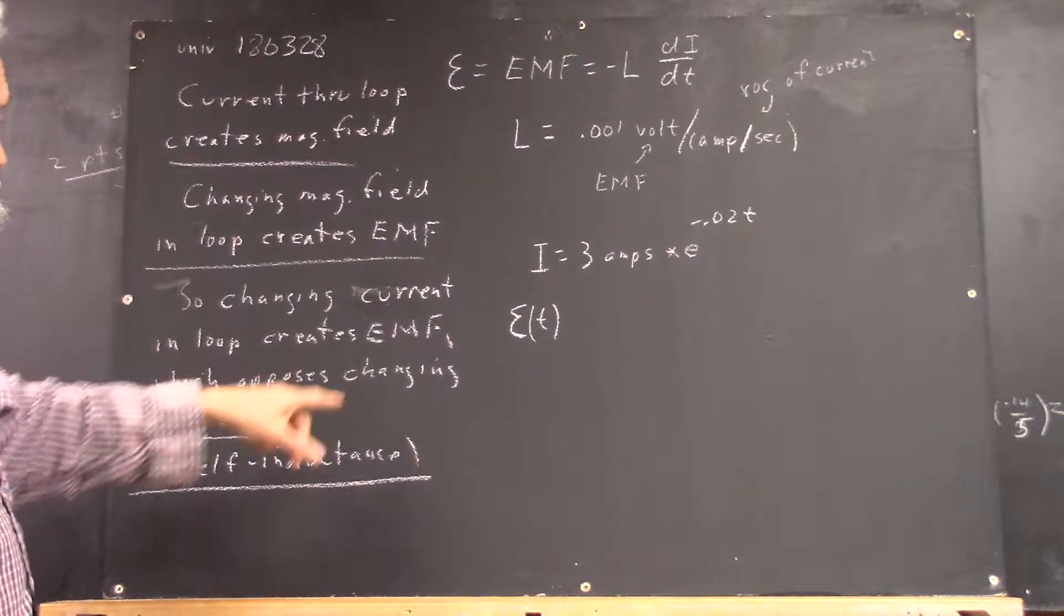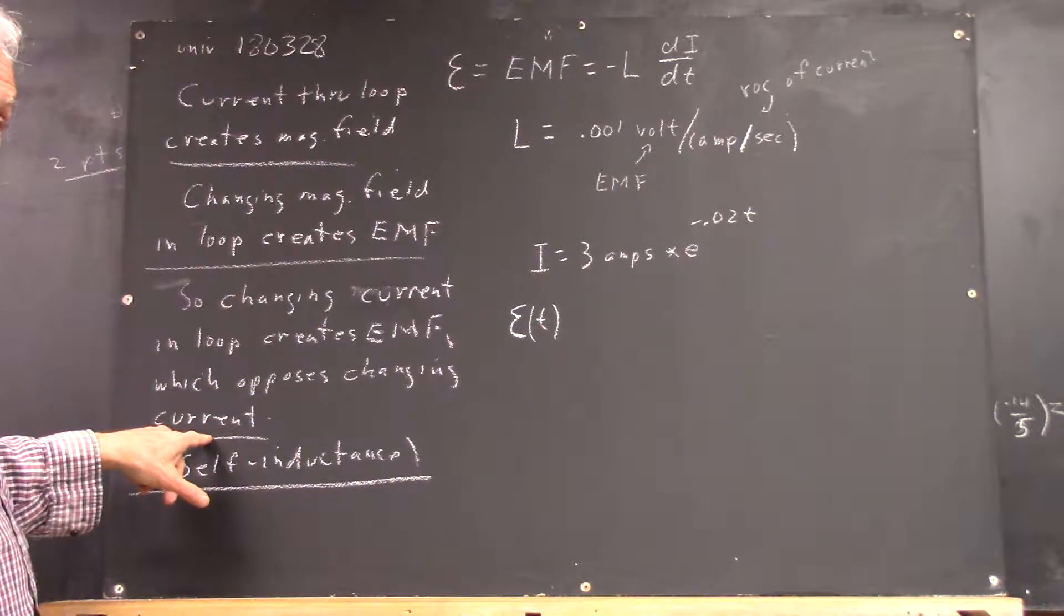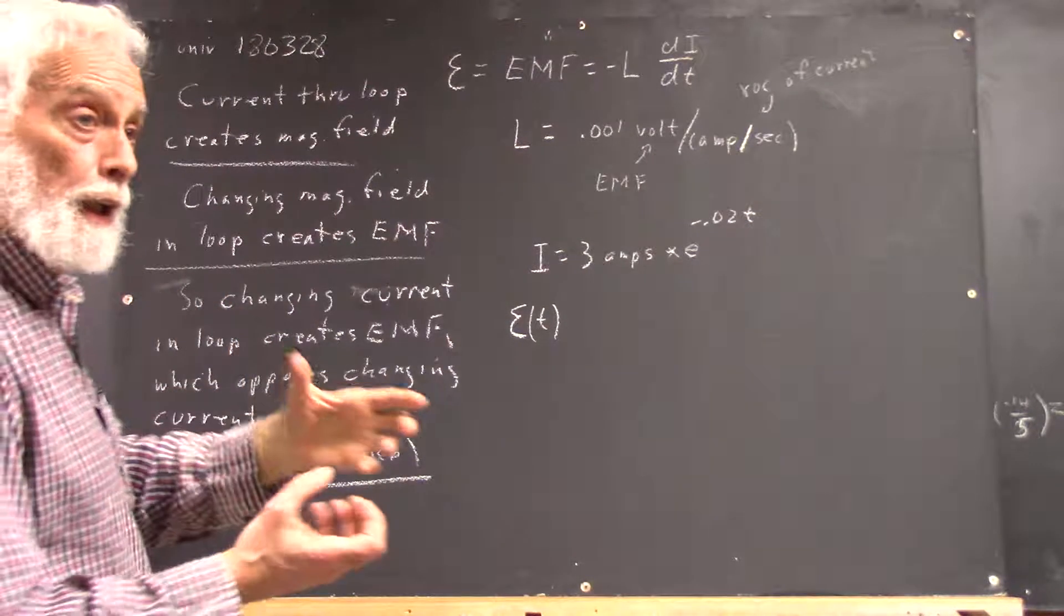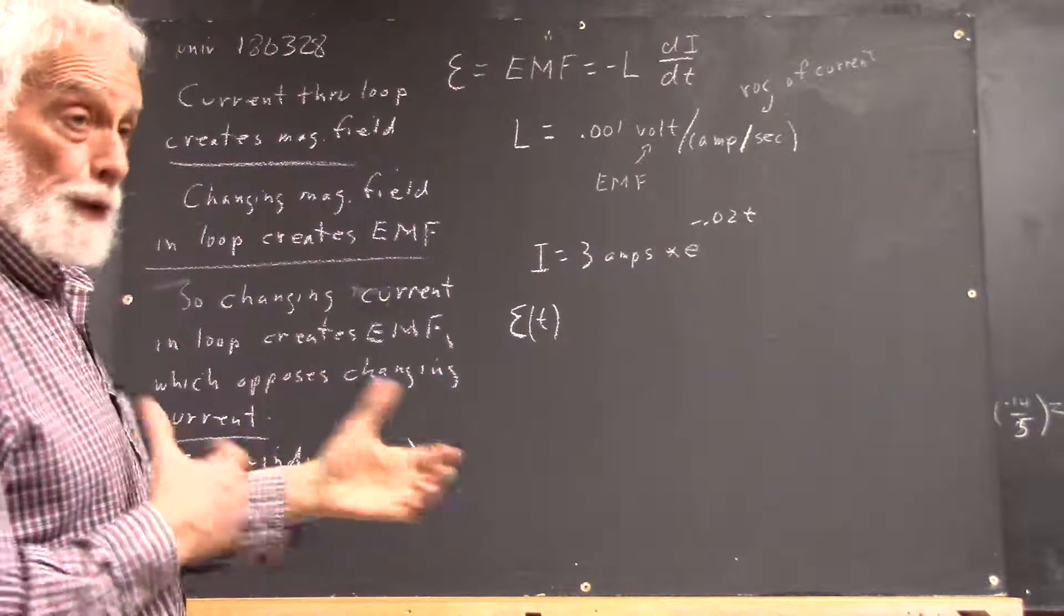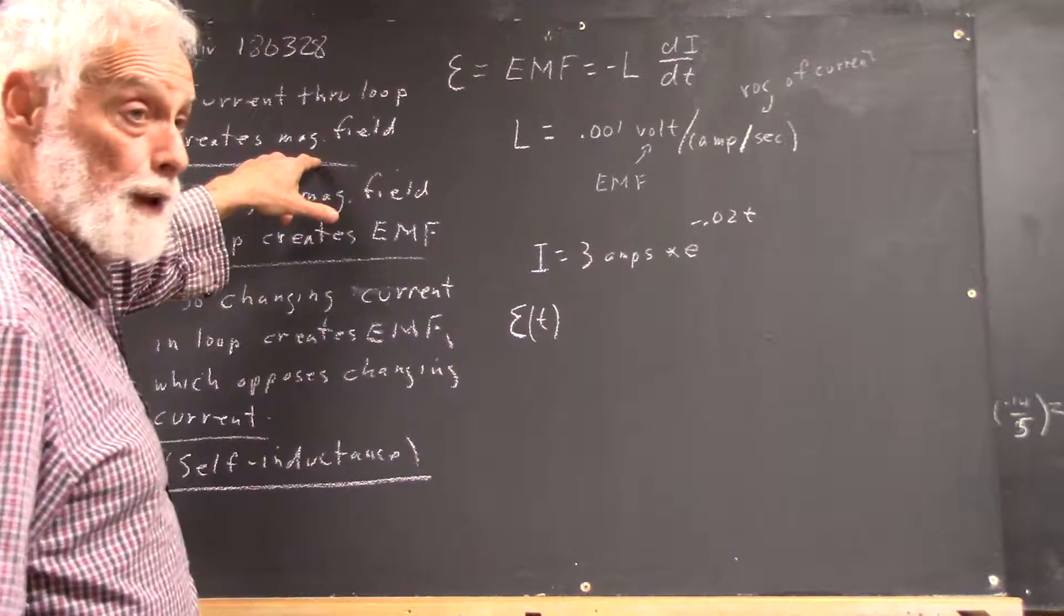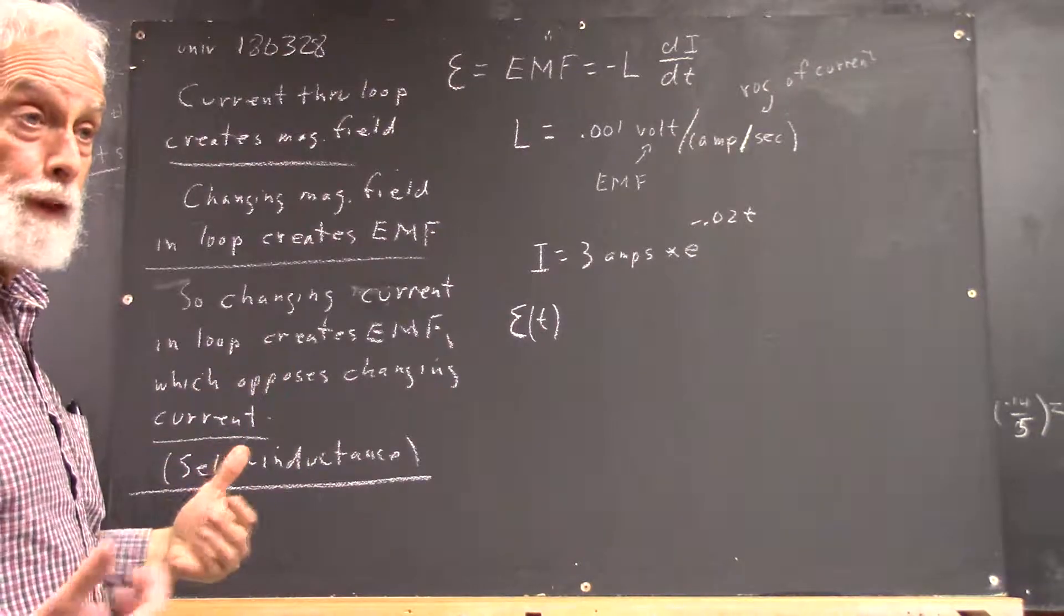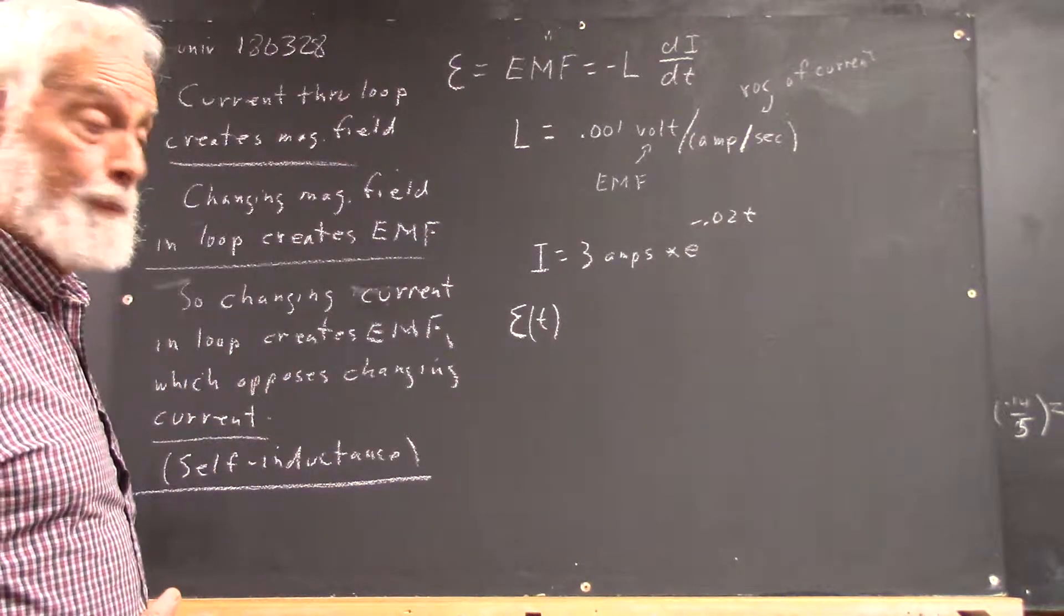Changing the current in a loop creates an EMF which opposes the current. If you've got a loop and a current in it, and you try to change the current, well, the changing current changes the magnetic field, which creates an EMF that opposes the changing current.